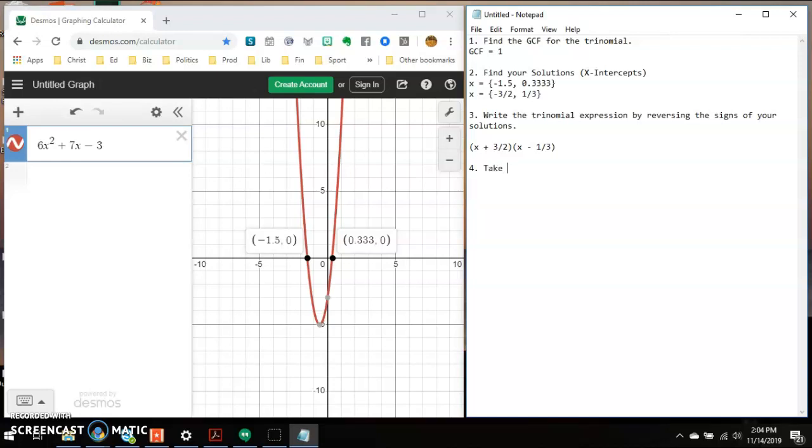So then here is where you have to, this is where knowing your fractions is important. Take your factored solution and make all of your constants and coefficients integers. So this is where, again, you really got to know how to use your fractions. So I need to get rid of the denominator for x plus 3 halves. Well, how do I do that?